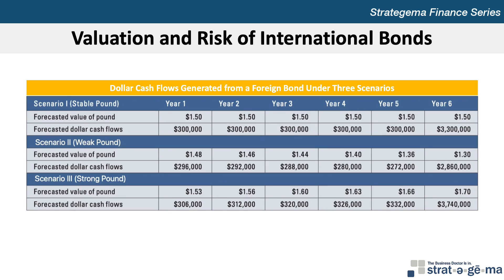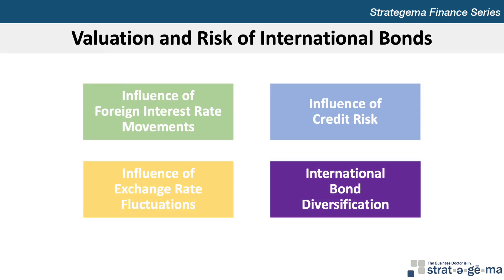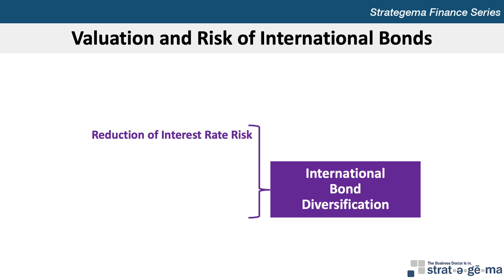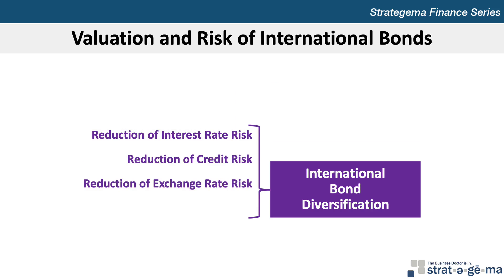This exhibit shows how the dollar cash flows generated from an investment will differ under three different scenarios: a weak, stable, or strong British pound. Finally, bond values are also affected by international bond diversification. When investors attempt to capitalize on investments in foreign bonds that have higher interest rates than they can obtain locally, they may diversify their foreign bond holdings among countries to reduce their exposure to interest rate risk, credit risk, exchange rate risk, as well as international integration of credit risk.